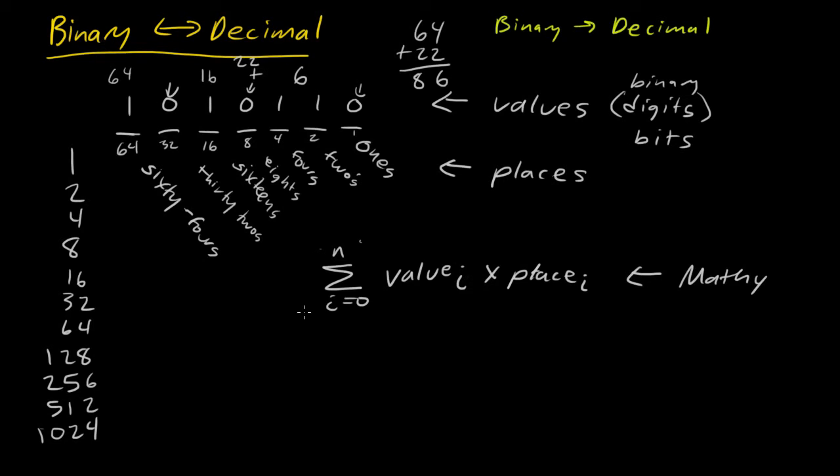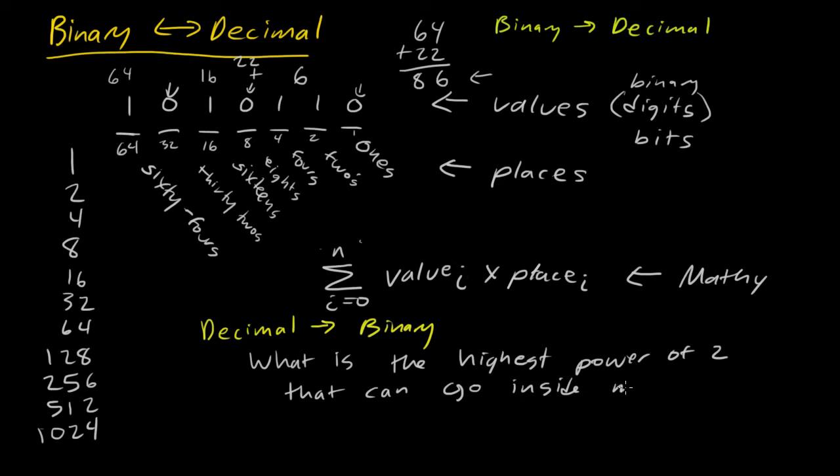Now, we want to be able to go back as well. Suppose I start with this number over here, 86. Let's just verify that this works. If I want to go from decimal back to binary, what I would need to do is I need to ask myself this question.